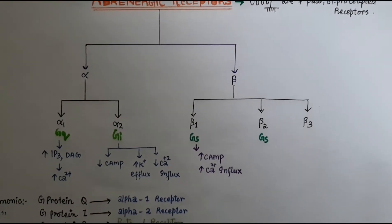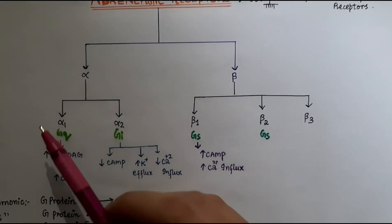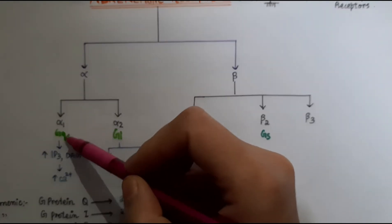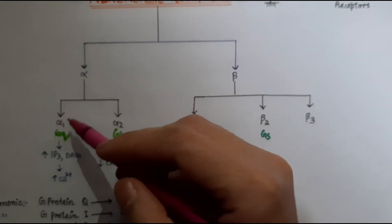are G-protein coupled. G-protein has various forms: Gq form, Gi inhibitory form, and Gs stimulatory form. Alpha-1 is related to the Gq form of G-protein. When ligands bind to adrenergic receptors, we have adrenaline and noradrenaline.